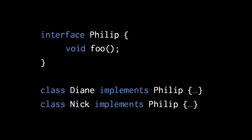The solution to this problem is to create what Java calls an interface. An interface is simply a list of methods, but those methods don't have any actual code in them. So here we have an interface named Philip with just one method defined in it, foo, but rather than defining an actual body for this method, we just put a semicolon instead of a pair of curly braces.